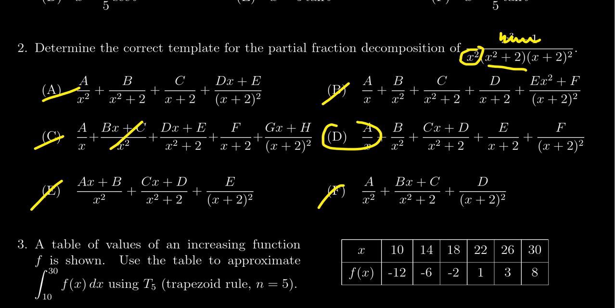But let's also look at the x squared plus two. That is an irreducible quadratic. So that is a situation where the numerator could be linear, Cx plus D. You can see that none of the other ones have everything correct together. So D does have to be the correct template for this partial fraction decomposition.